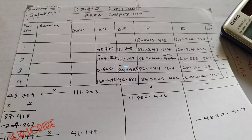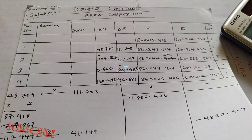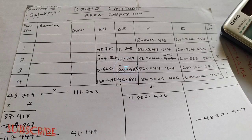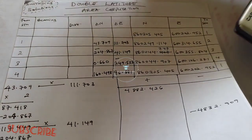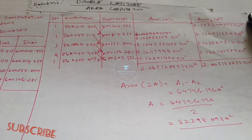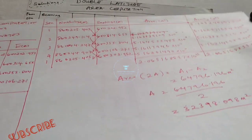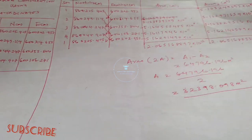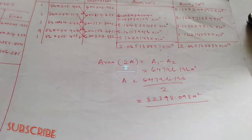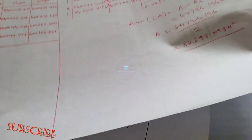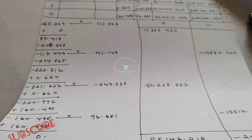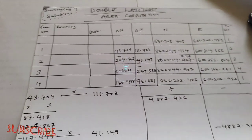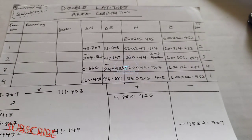Hello guys, welcome to Surveying Solutions, your number one channel where you get solutions to all your surveying problems. Today we are going to show you something very interesting. On one of our previous videos we showed you how to calculate area using a cross coordinate method. On this video we are going to show you how to calculate area again, however not using the cross coordinate method but using the departure and the latitude — what we call the double latitude or double departure method.